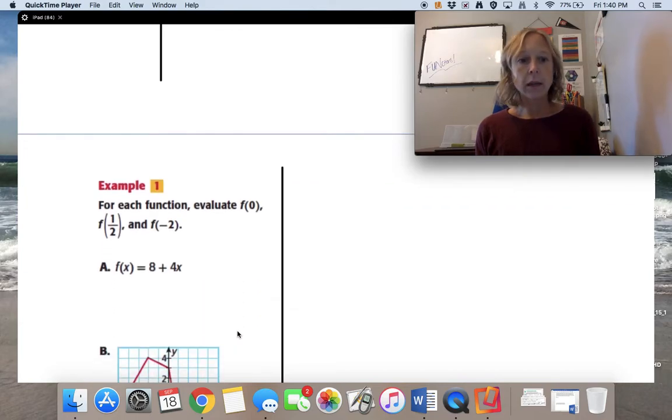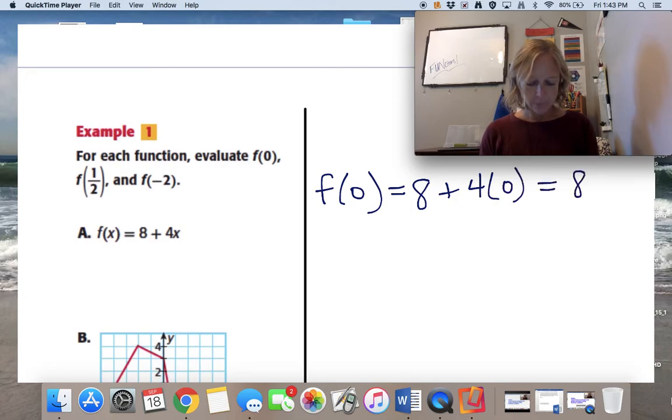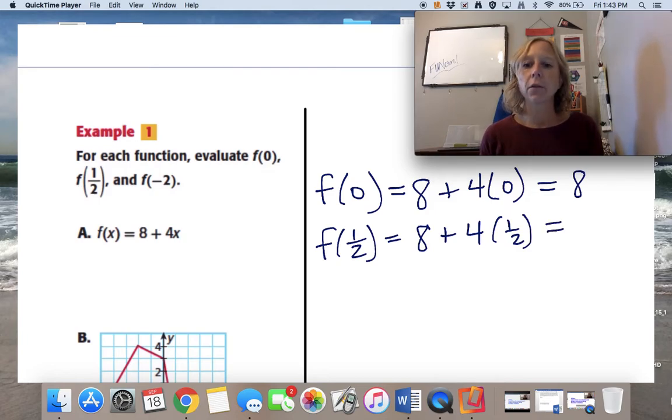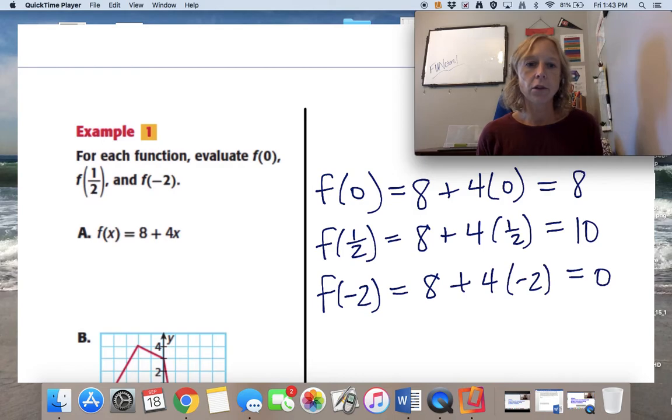So let's practice evaluating functions. So let's try these examples. The directions say for each function, evaluate the function at 0, at 1 half, and at negative 2. So if we look at example a, we are being told first to use an input of 0. So the way I would write this and show my work is I would say the function at 0 is equal to 8 plus 4 times 0, and that is equal to 8. Now we're going to do it again and evaluate what is the function equal to at a half. Well, that's 8 plus 4 times 1 half. Remember your order of operations. Half of 4 is 2. 2 plus 8 is 10. Now I'm going to move on to negative 2. Evaluate the function at negative 2. 8 plus 4 times negative 2. So I have negative 8 plus 8 is 0. And there, I've evaluated that function at the three input values.